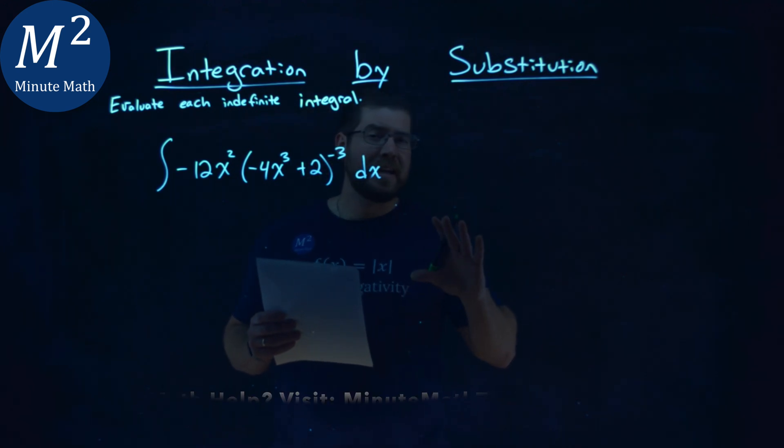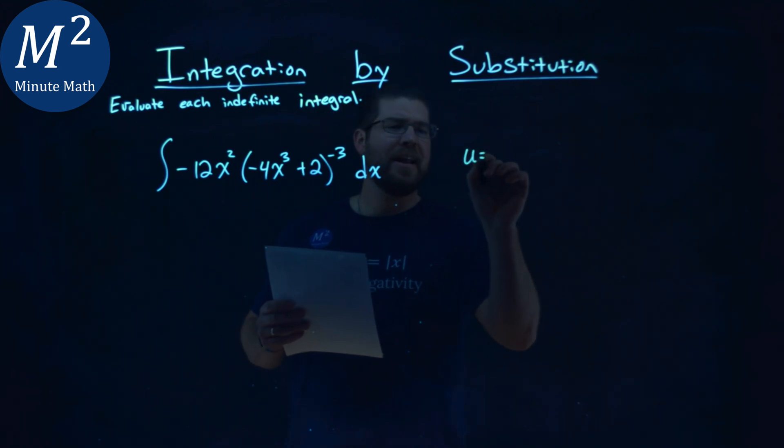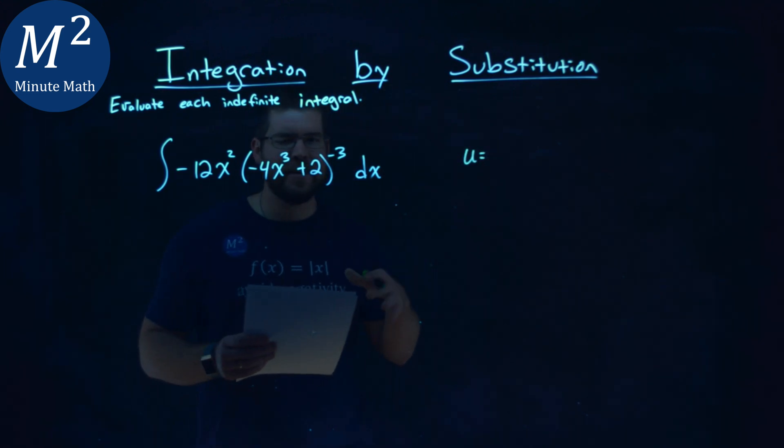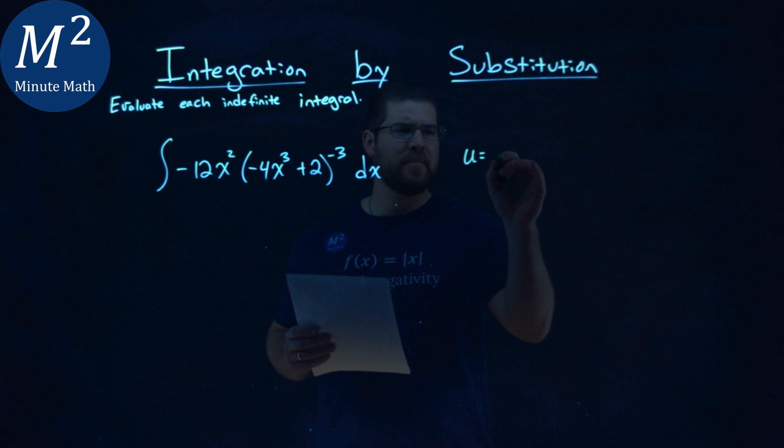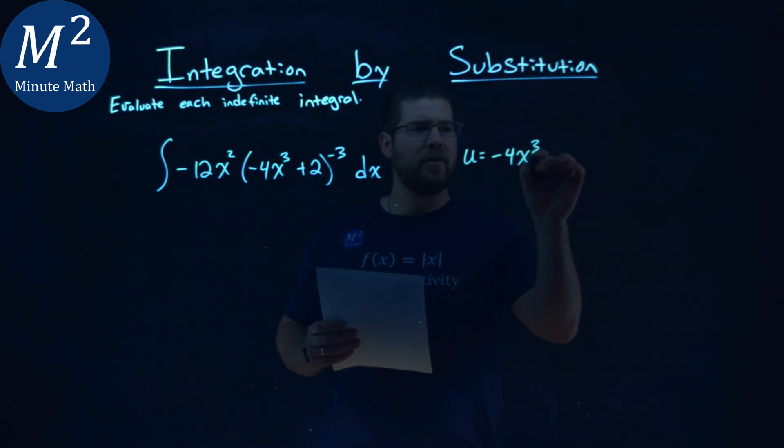The first thing I want to do is find a u value for my substitution. I generally go with whatever is in my parentheses and see from there. So let's do that: u equals negative 4x³ plus 2.